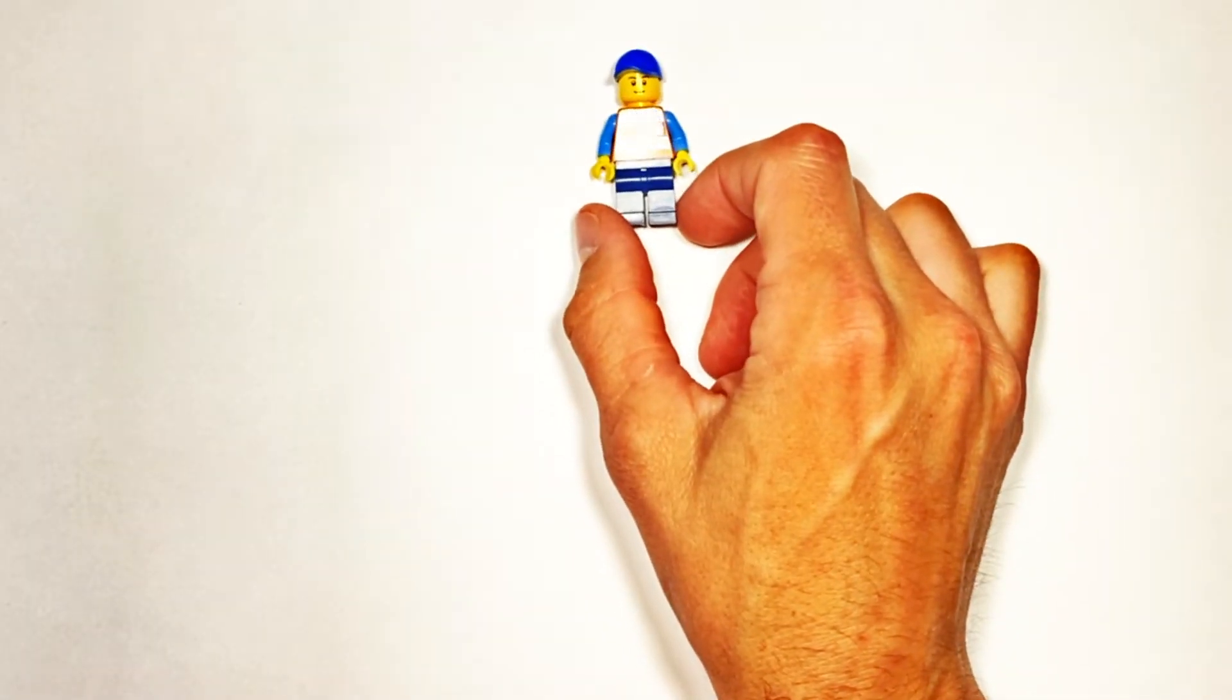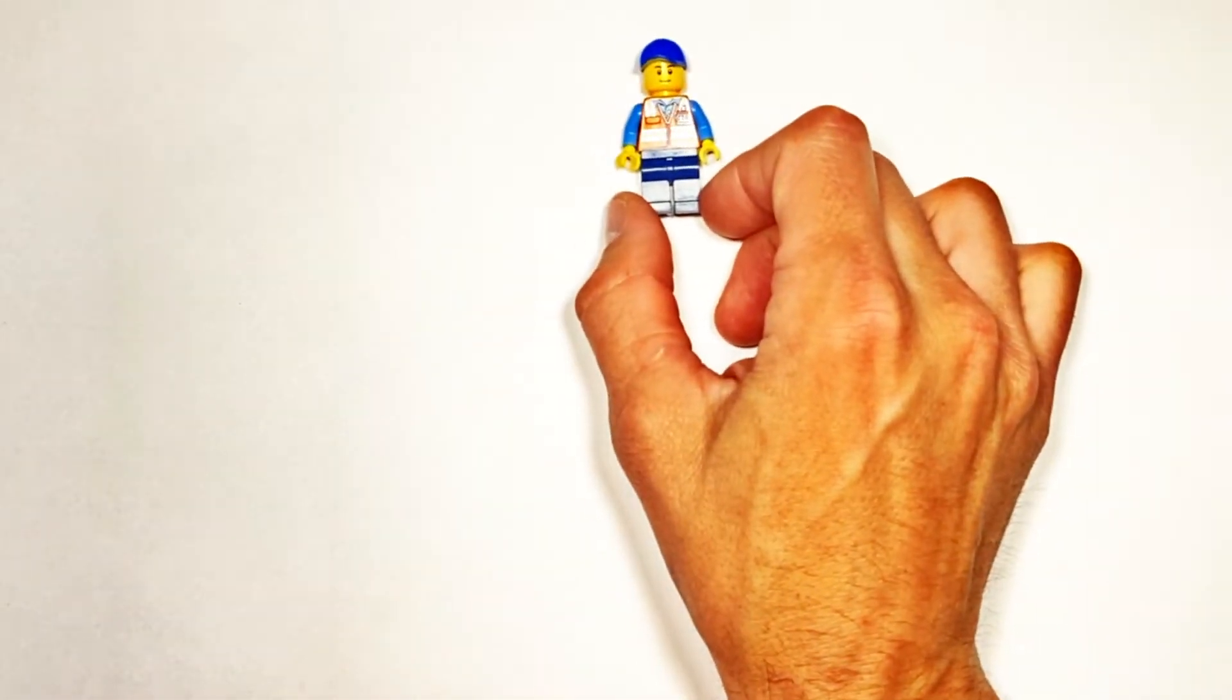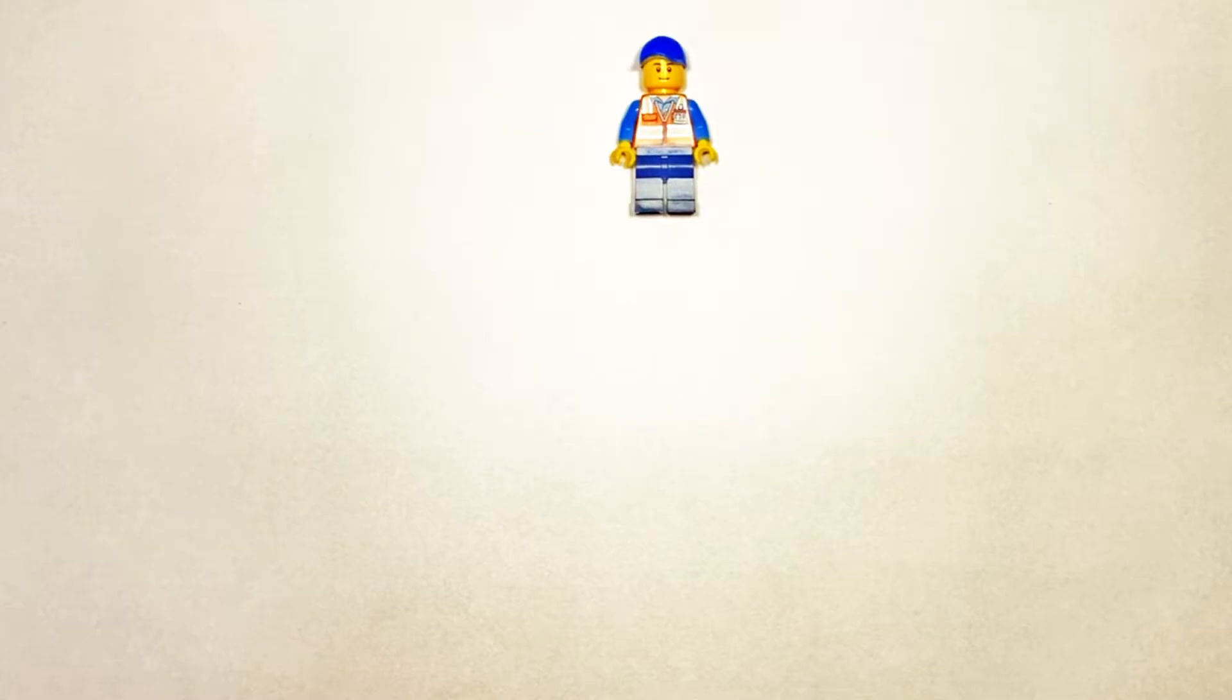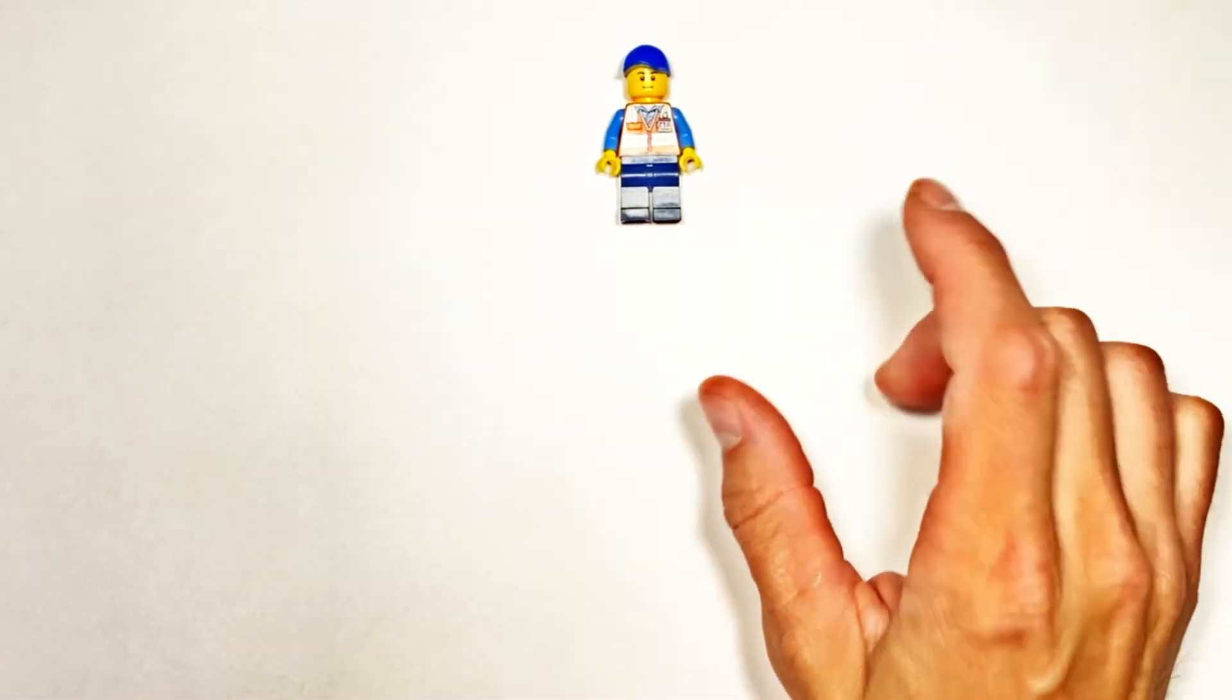So to understand the difference between these two terms, I want to take a look at this little Lego dude here, and we're going to let him walk around back and forth. Now imagine we're in math class, and he's walking around not on just a big empty field here, but rather back and forth along a number line.